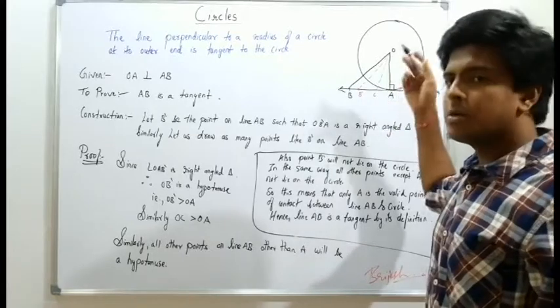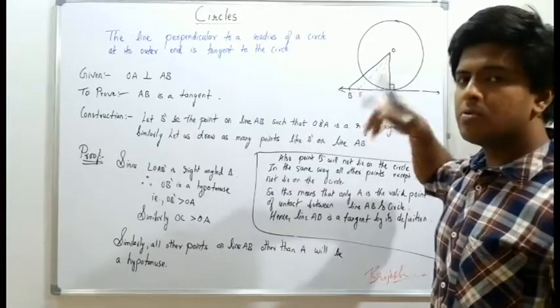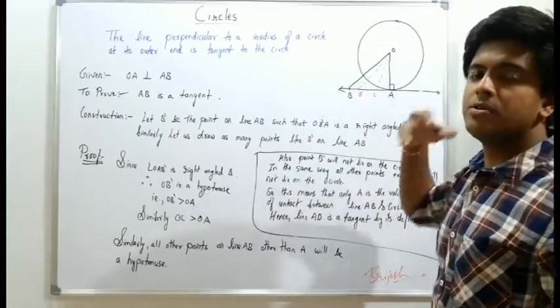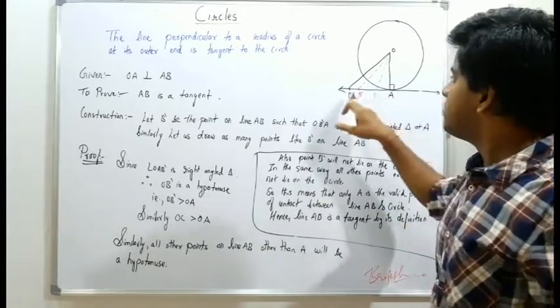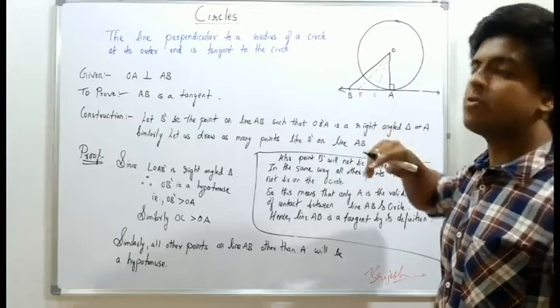A is the valid point of contact between this line and circle. By the definition of tangent, this AB is tangent because it is having only one point of contact, that is A.